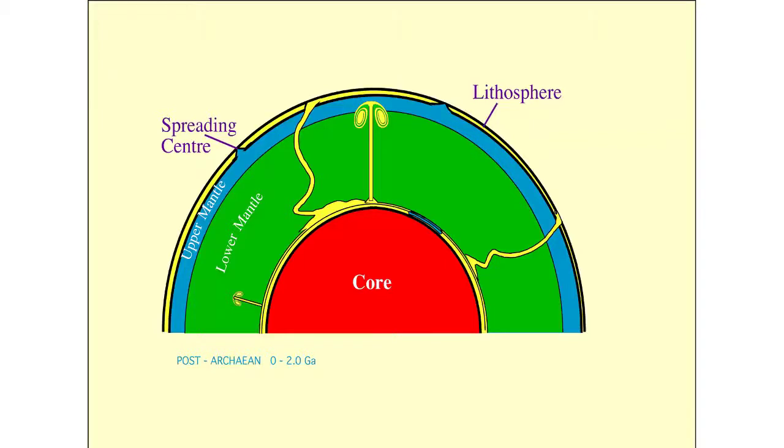This is a cross section through the mantle and the earth. In the center of the earth, or towards the center of the earth, is the core, the iron-nickel core.